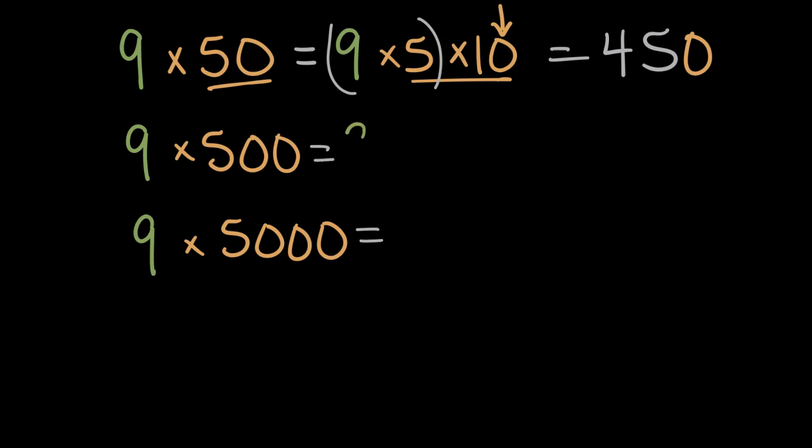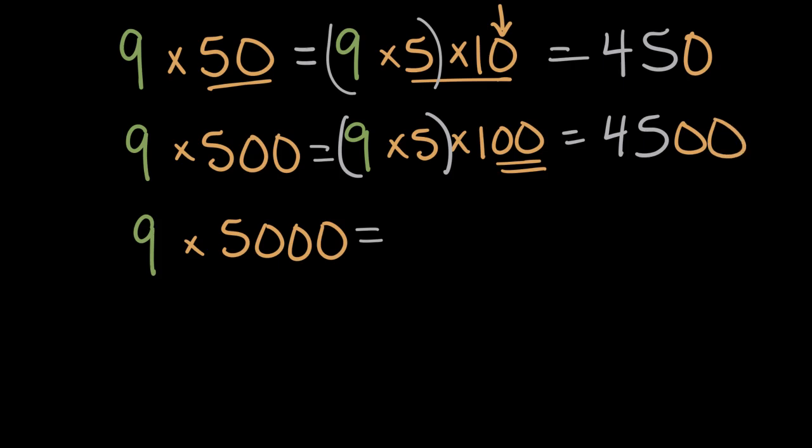Nine times 500 will be nine times 5 times 100. 500 is five hundreds, just like 50 was five tens. Multiplying across, nine times five still equals 45. But this time, we will add two zeros to the end, or 4,500. And finally,